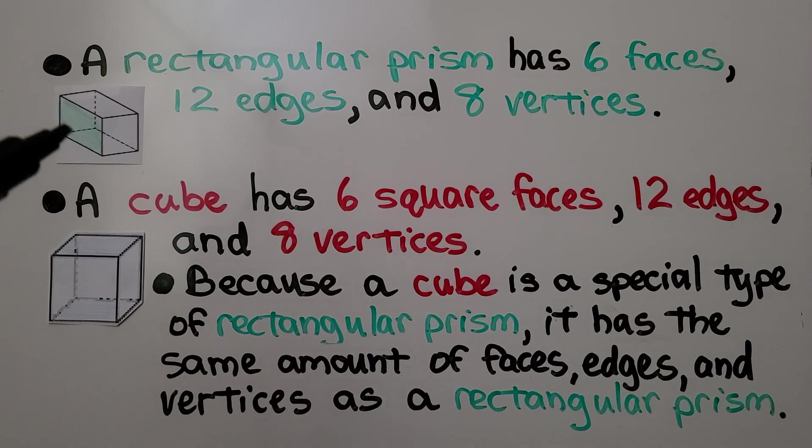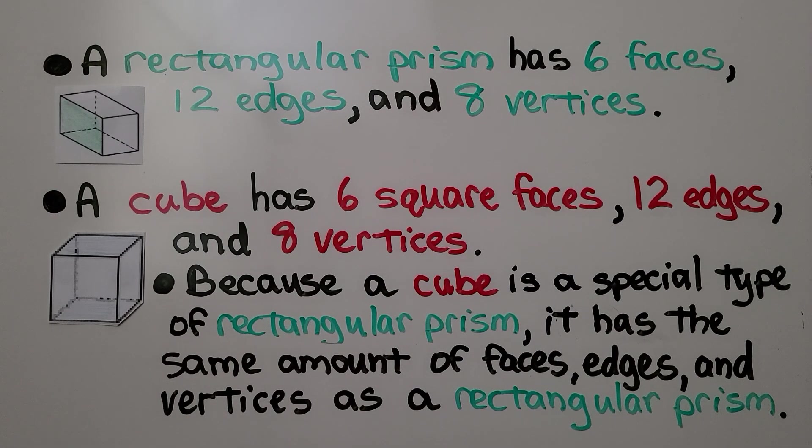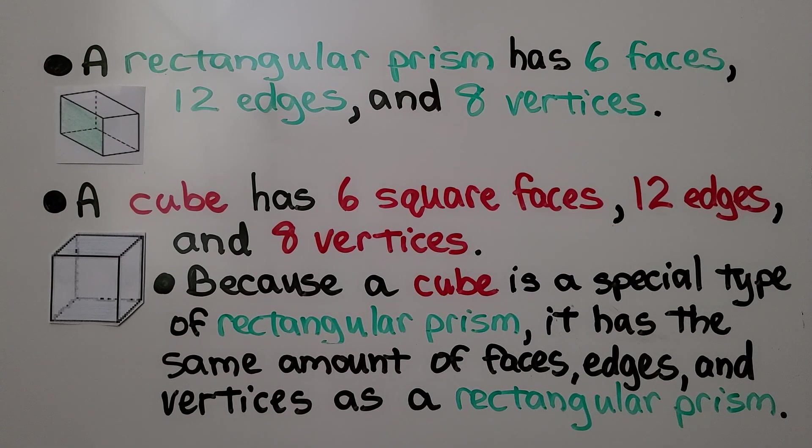This is a rectangular prism. A rectangular prism has six faces, twelve edges, and eight vertices. A cube has six square faces, twelve edges, and eight vertices. You notice the numbers are the same?